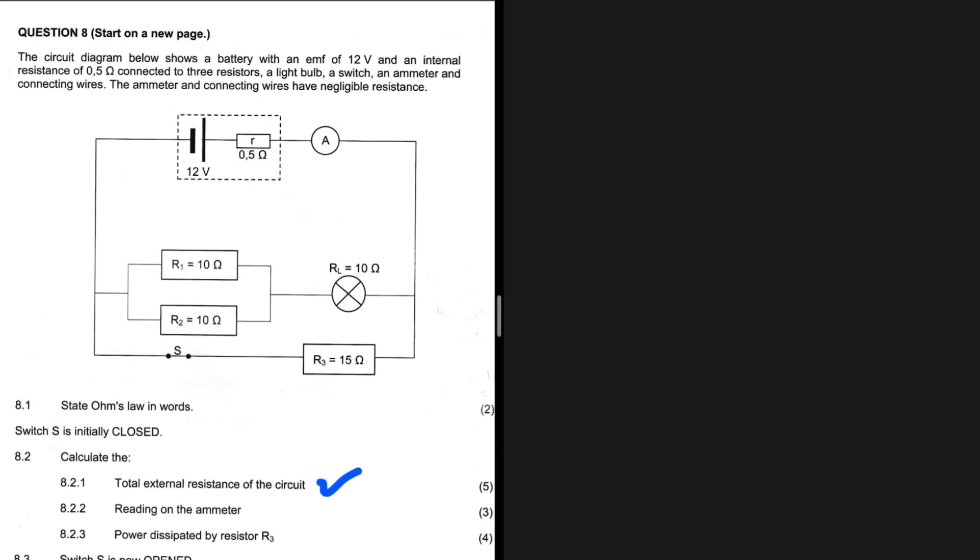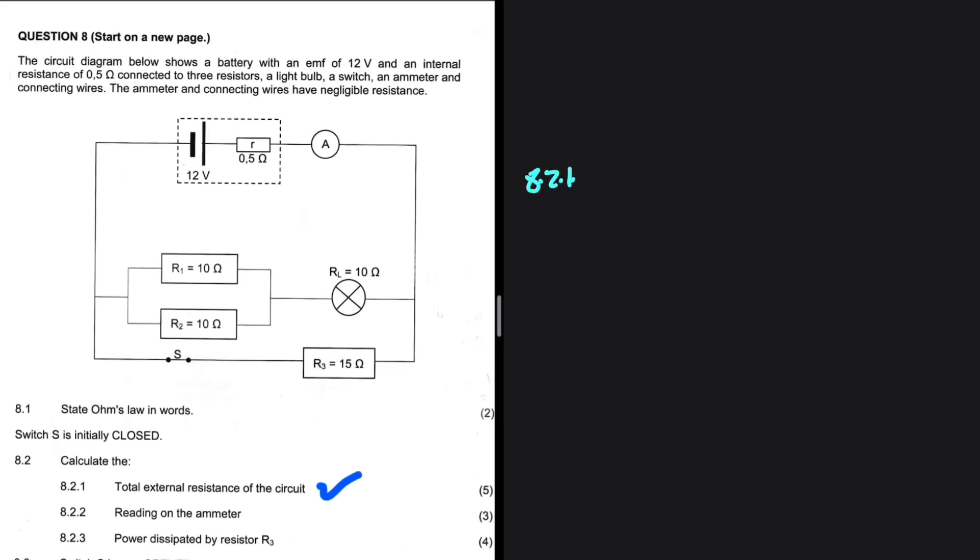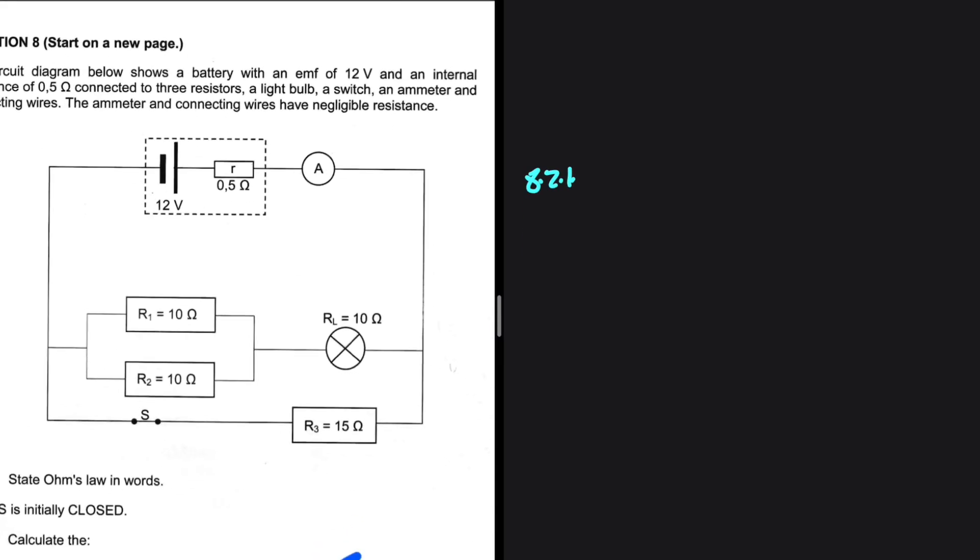We're going to skip 8.1 obviously. It is just Ohm's law. V equals I multiplied by R. Let's take a look at 8.2.1 instead. So we're looking for the total external resistance of the circuit.